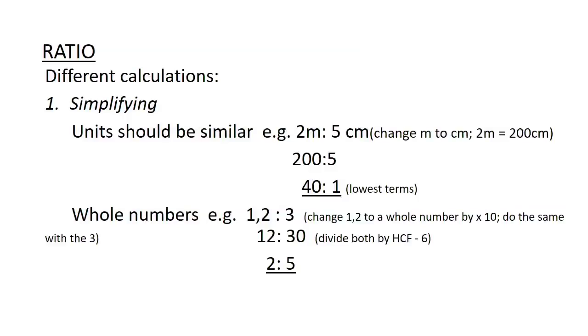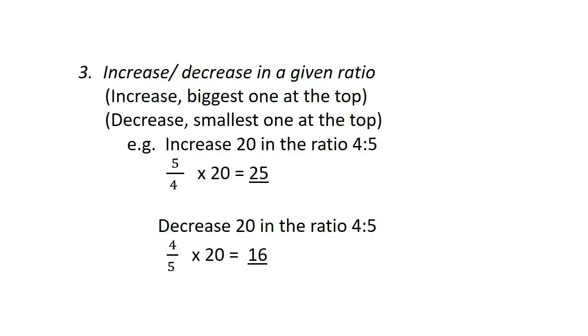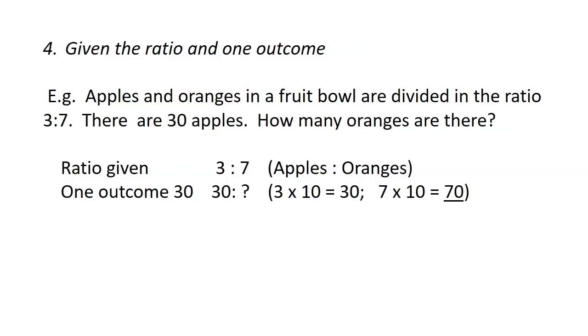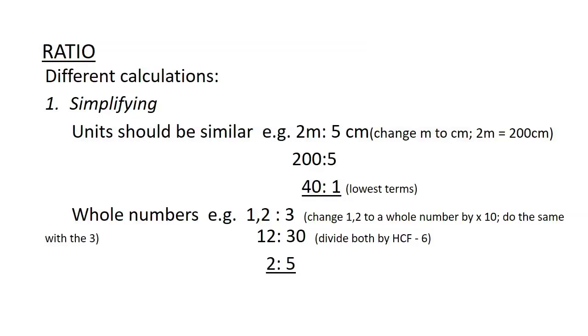Ratio. There are only four different types of questions they can ask about ratio: they can ask you to simplify — and you should always simplify the ratio that you get; division in a given ratio; increase or decrease in a given ratio; and you are given one ratio and one outcome. We will start with the first one: simplifying of ratios.